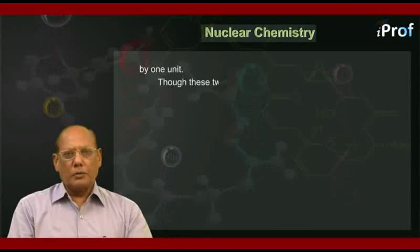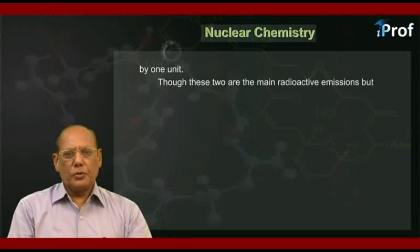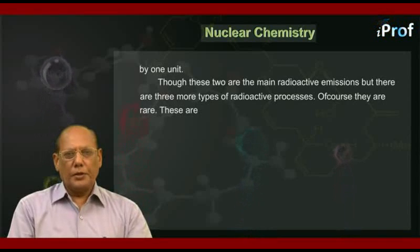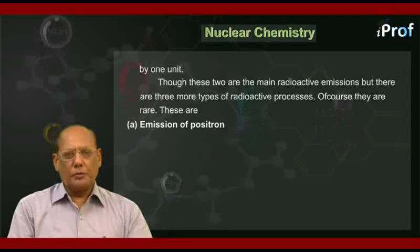Though these two are the main radioactive emissions, there are three more types of radioactive processes. Of course, they are rare. These are: (a) emission of positron. The example is potassium-19-39 changing into argon-18-39 plus e-plus-1-0.